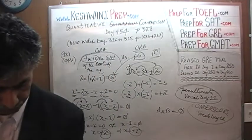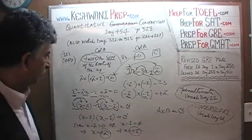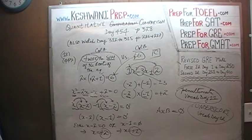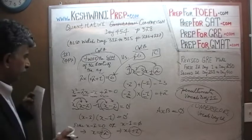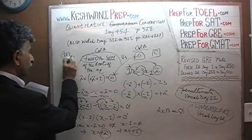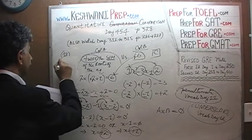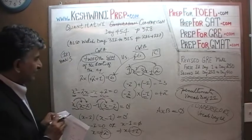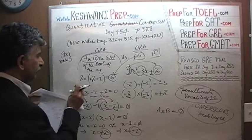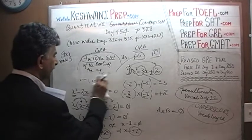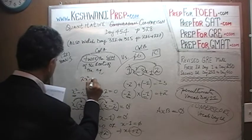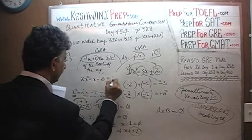Here is the bonus problem — it is not in the book. It is called problem 12 bonus. Again, twice the sum of the roots of a different equation: 2x squared minus x minus 6 equals zero. We are being asked to compare it against 1.